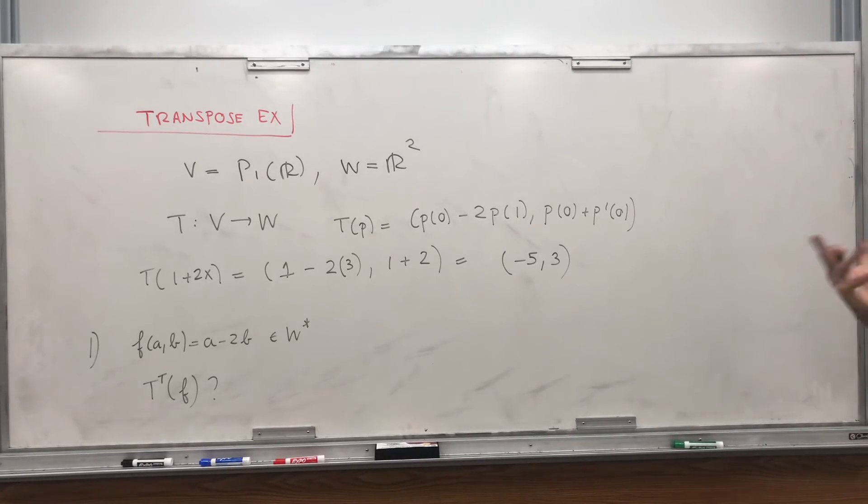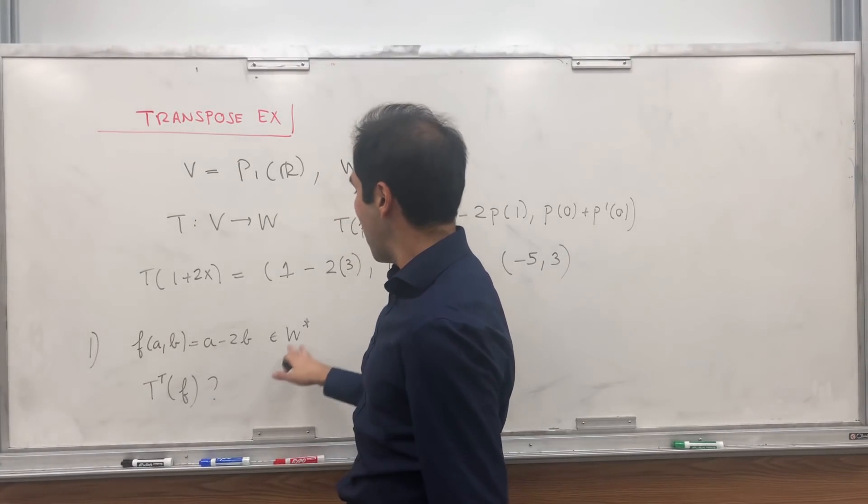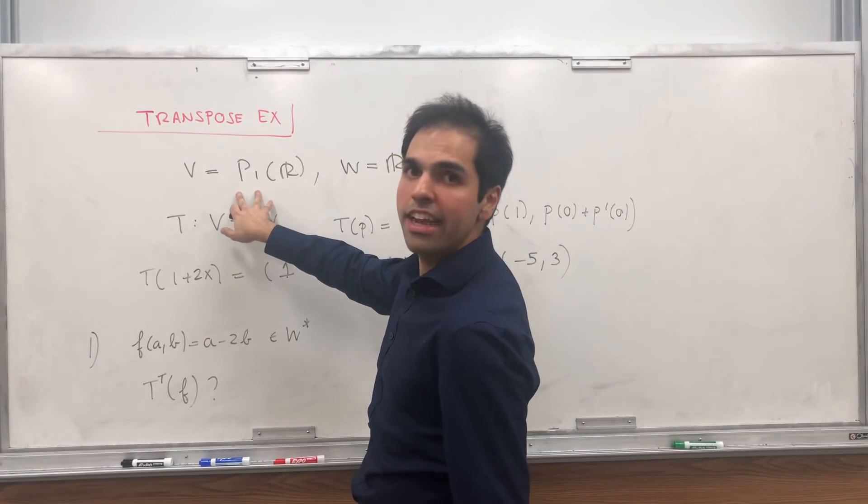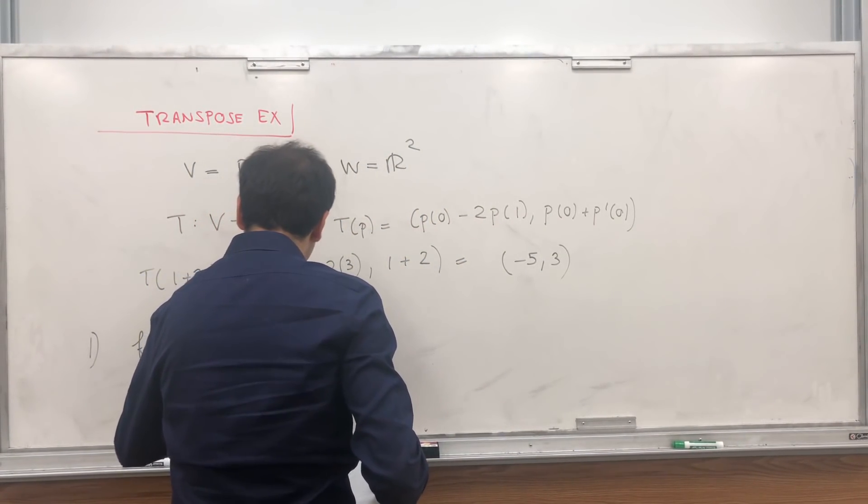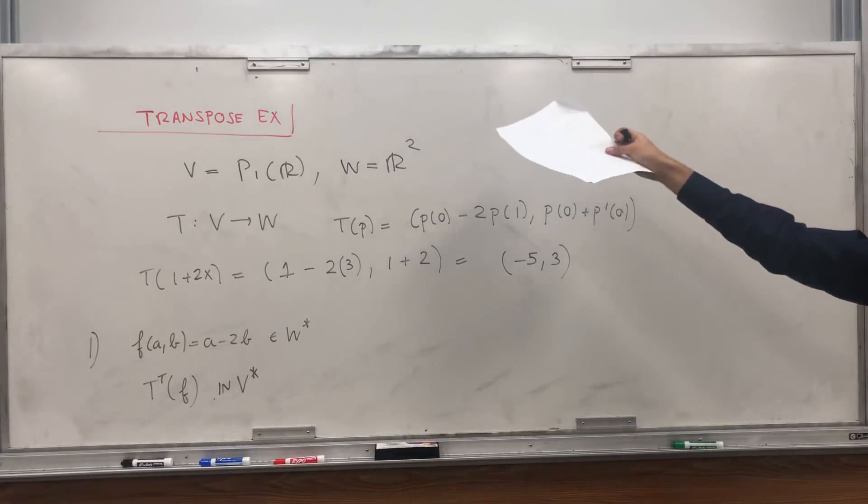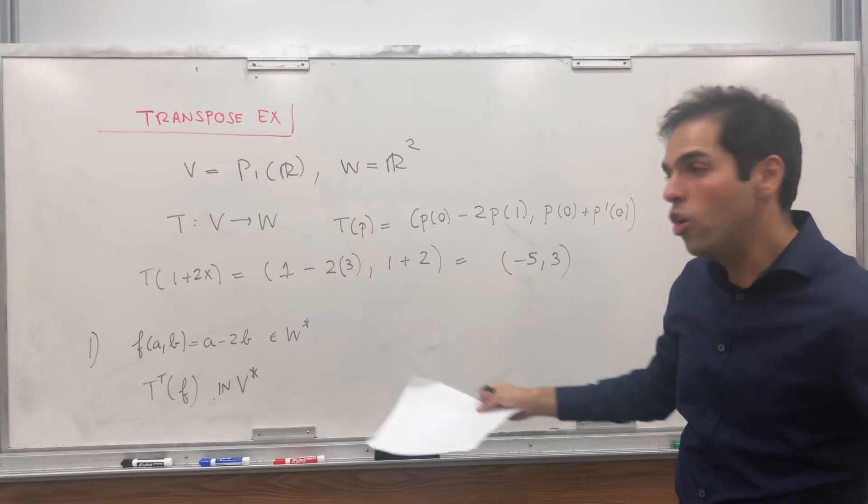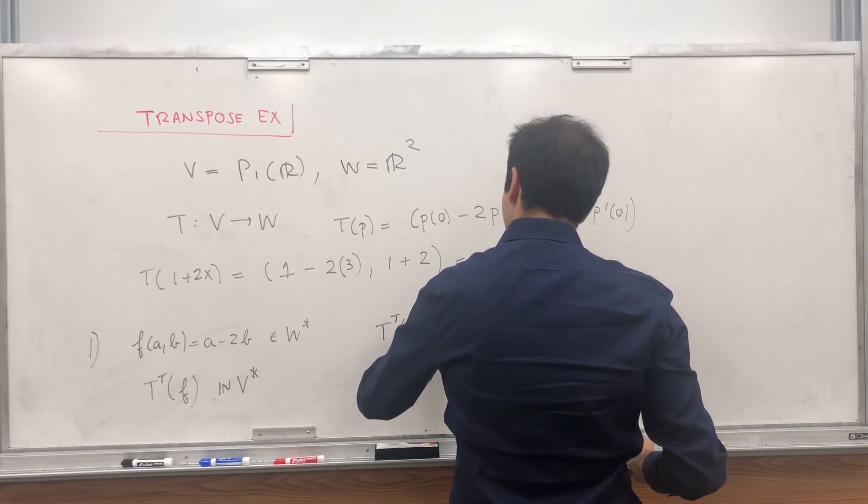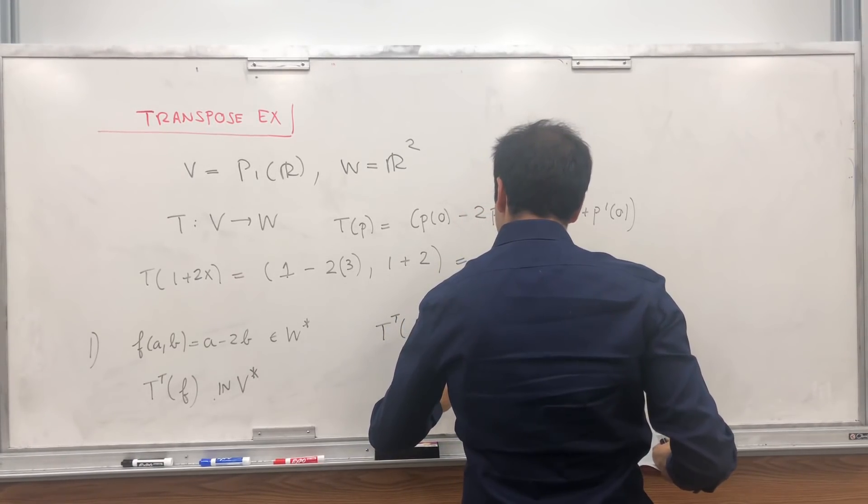Now, what is T transpose? It takes an element of W star as an input and spits out an element of V star. So this thing is in V star, which means it's a linear transformation from polynomials to R. In other words, it takes a polynomial as its input.